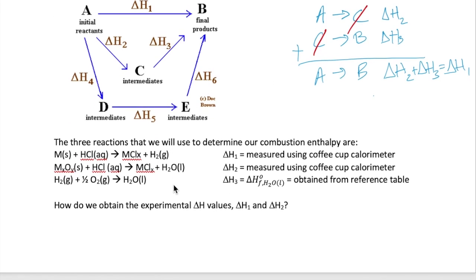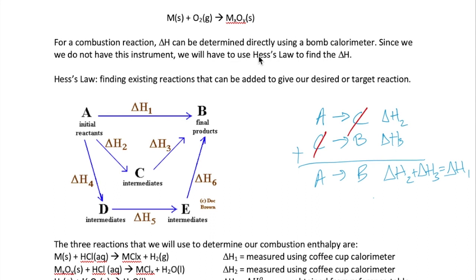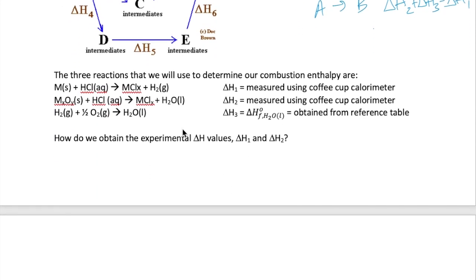So for today's reaction, our target is the combustion reaction that I was showing you earlier. It turns out that we can use the following three reactions to find our delta H of combustion. The three reactions are: a reaction between a metal M with HCl to produce a metal chloride and hydrogen gas. The delta H of this reaction will be measured experimentally using a coffee cup calorimeter. We also need a second reaction, which is a reaction between a metal oxide MxOy with HCl to produce metal chloride and water. This delta H will also be measured using a coffee cup calorimeter. Lastly, we will need a reaction called the formation reaction of water, which is shown here. The value of delta H for this reaction is called the standard molar enthalpy of formation and can be obtained in a thermodynamic reference table like the one we use in lecture.